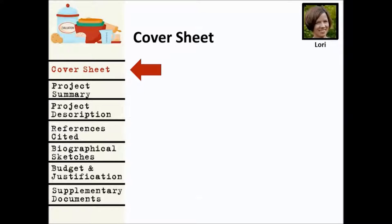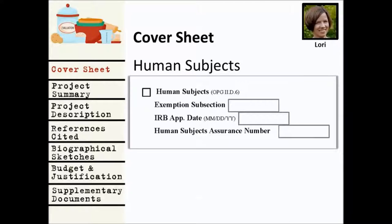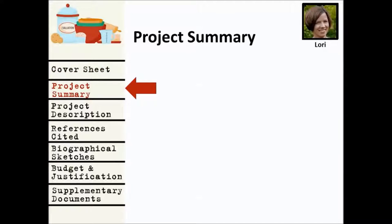The first piece of your proposal is your cover sheet, which is automatically generated as you provide answers to questions in the Fastlane system. Evaluation shows up here in the form of a box you will need to check if you're going to be collecting information from or about human subjects as part of your evaluation or research efforts. For most of you, you'll need to check the box to indicate your approval status is pending. Rules will vary by institution in terms of what is subject to HSIRB approval.